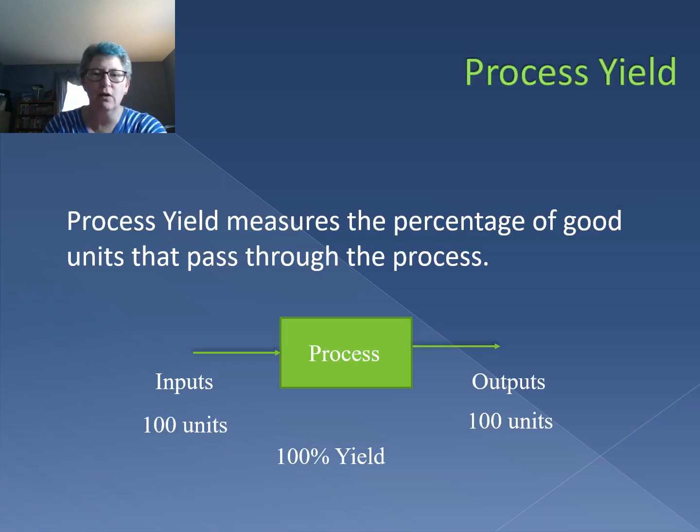Up until this point, we've made the assumption that whenever we put something into a process, it comes out of the process. If we start with 100 units going into a process, we're going to have 100 units coming out of the process, which means we're going to have a 100% yield because process yield measures the percentage of good units that pass through the process.